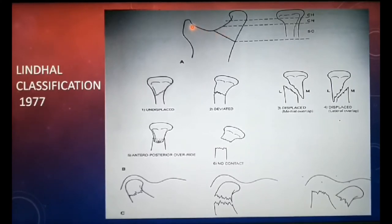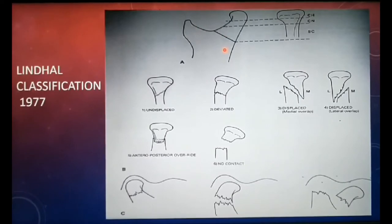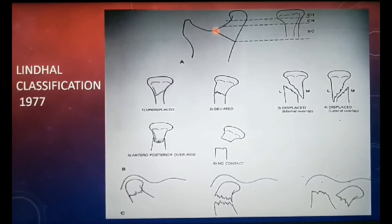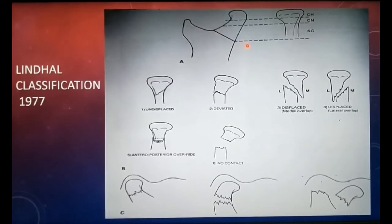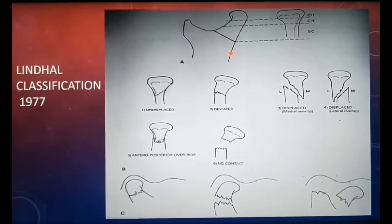The subcondylar region is located below the condylar neck and extends from the deepest point of the sigmoid notch anteriorly to the deepest point along the concave posterior aspect of the ramus. Depending on the location, these fractures are described as high or low subcondylar fractures.